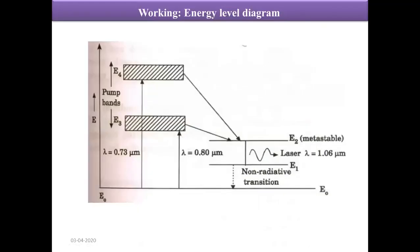This is the energy level diagram for the Nd:YAG laser. E0 is the ground state. E3 and E4 form the absorption band of the neodymium ion. E2 is the metastable state and E1 is the first excited state. E0, E1, E2, and E3/E4 together make up the four-level laser system.